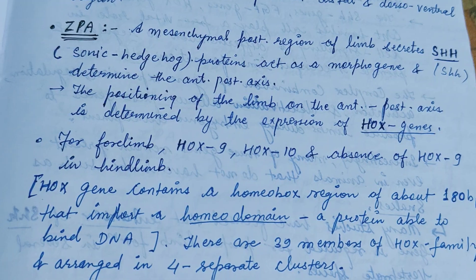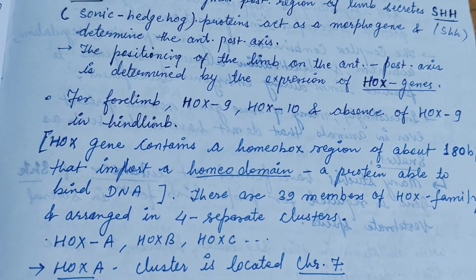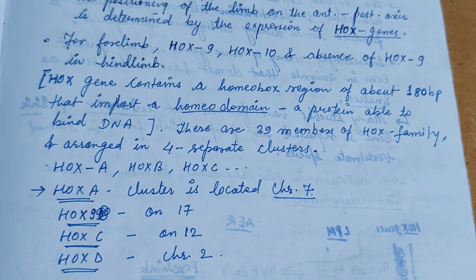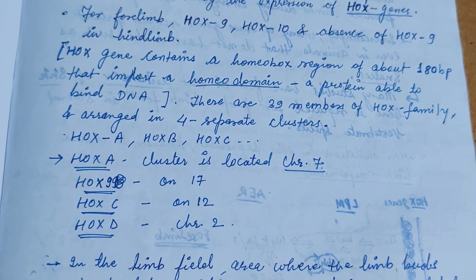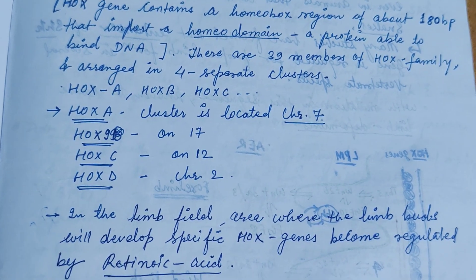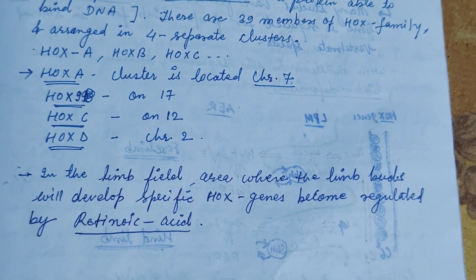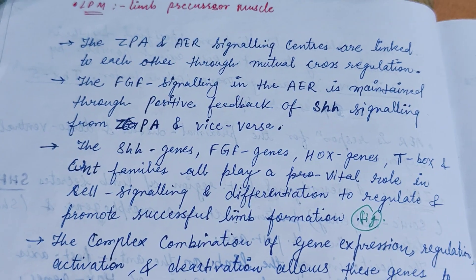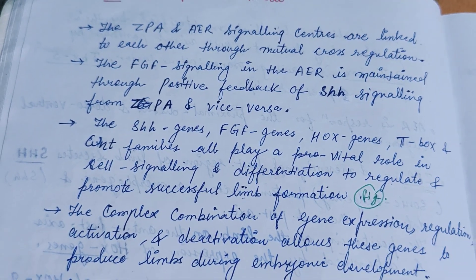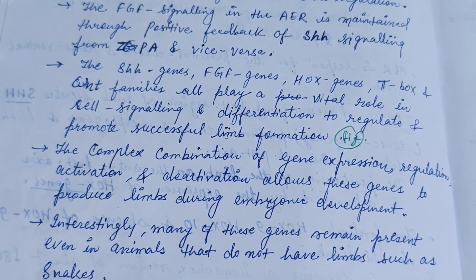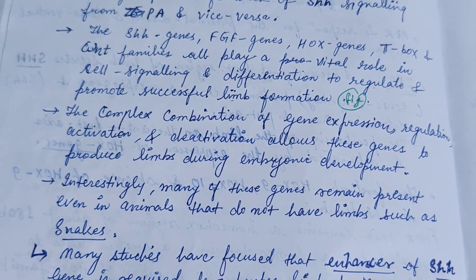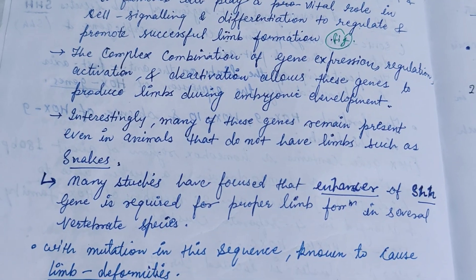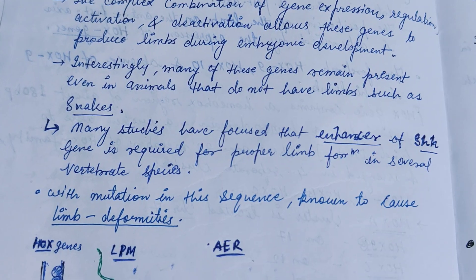The ZPA (zone of polarizing activity) secretes Sonic Hedgehog (Shh) protein, which acts as a morphogen and determines the anterior-posterior axis. It is also expressed by the Hox genes for four limbs — Hox9 and Hox10 — with absence of Hox9 in the hind limb. There are also Hox a, Hox b, Hox c, and Hox d clusters. In the limb field areas, specific Hox genes become regulated by retinoic acid. The ZPA and AER signaling centers are linked through mutual cross-regulation; Shh genes, FGF genes, Hox genes, T-box, and Wnt families all play a vital role in cell signaling and differentiation.